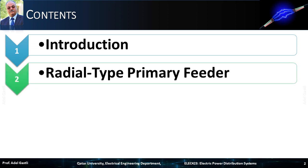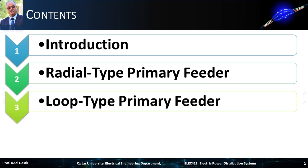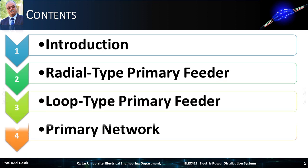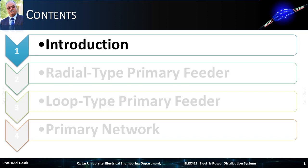Then we will consider the radial type primary feeder, then the loop type primary feeder, and finally the primary network. We start with the introduction.